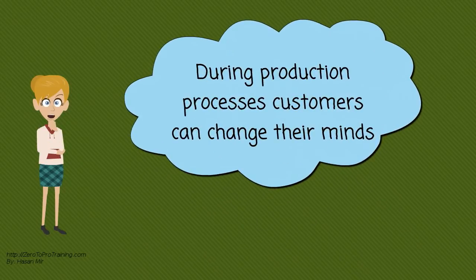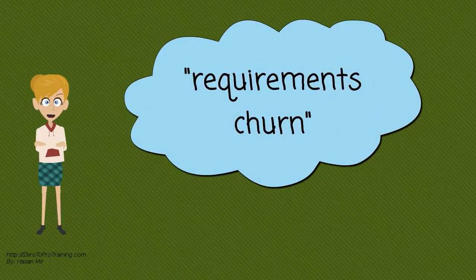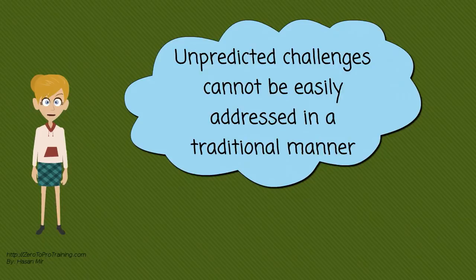A key principle of Scrum is its recognition that during production processes the customers can change their minds about what they want and need — often called requirements churn — and that unpredicted challenges cannot be easily addressed in a traditional predictable plan manner.